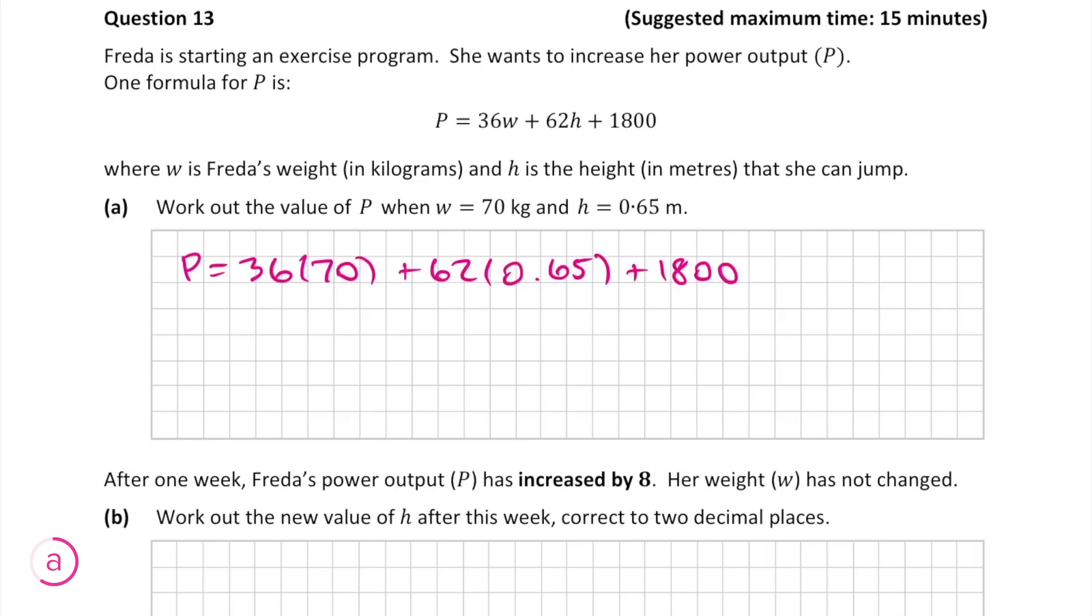So this is the new equation we get, and now we need to multiply out the brackets. Adding these numbers together, we get p is equal to 4360.3. For working this out, we get 6 marks.